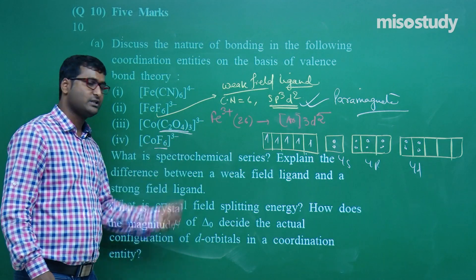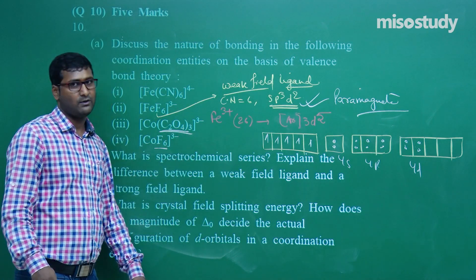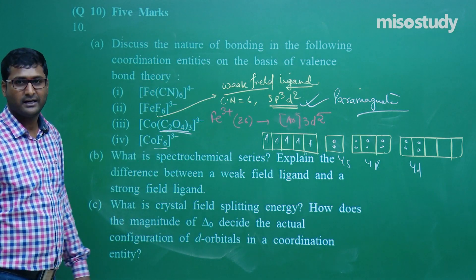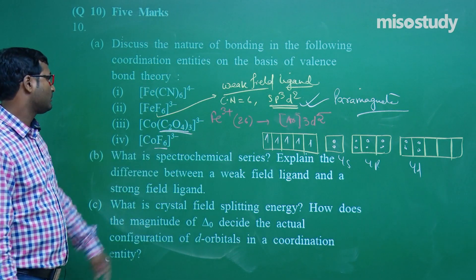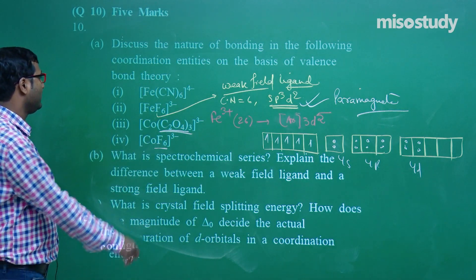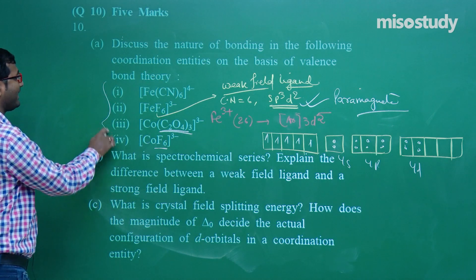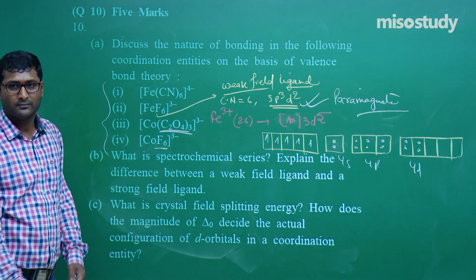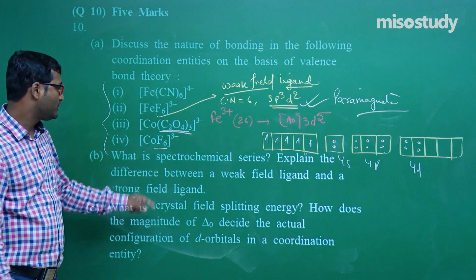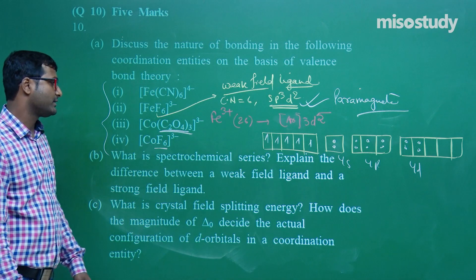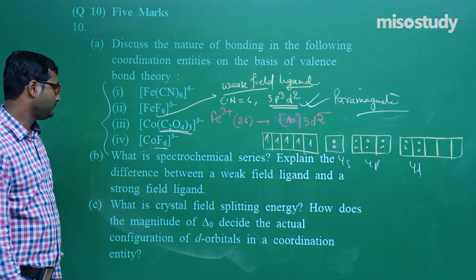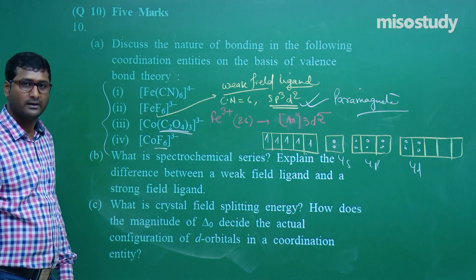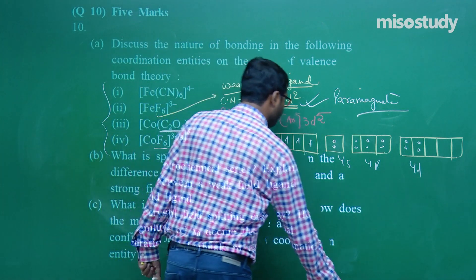For oxalate (C2O4^2−), oxygen is the donor atom — oxygen as donor atom means this is a weak field ligand. Similarly you can find the hybridization and magnetic nature for other complexes.